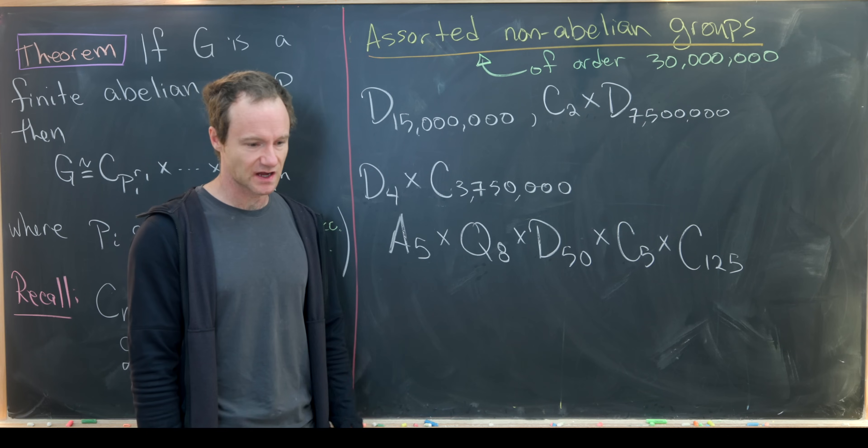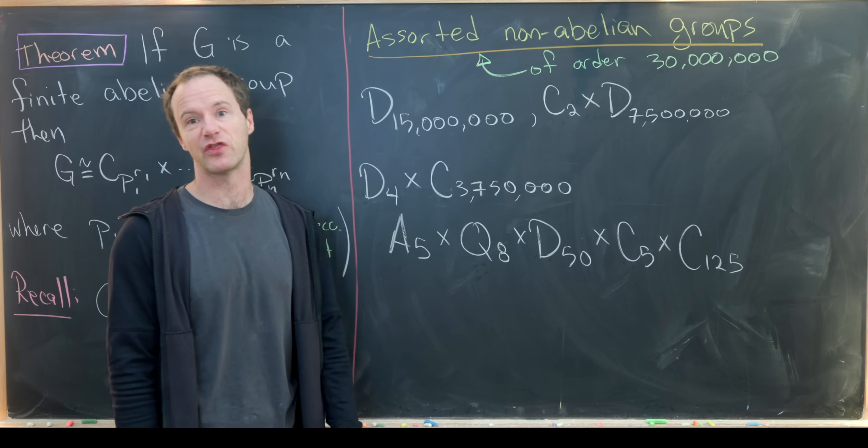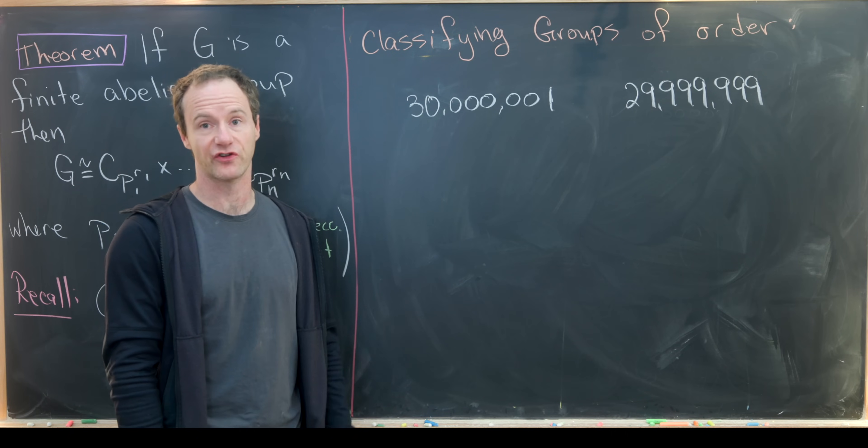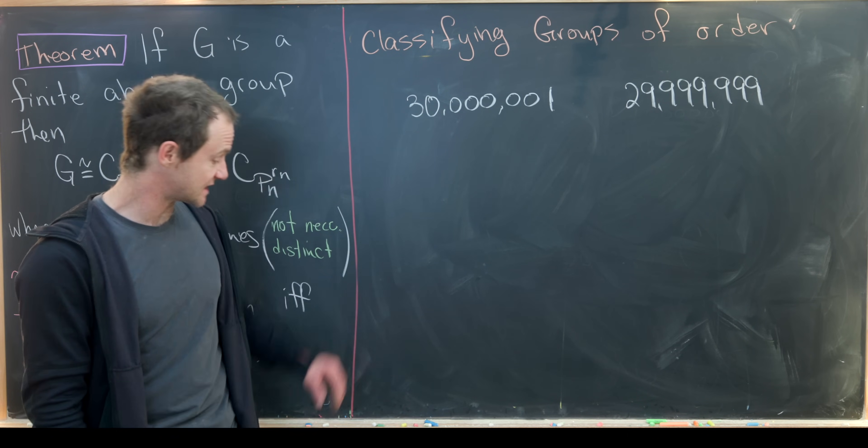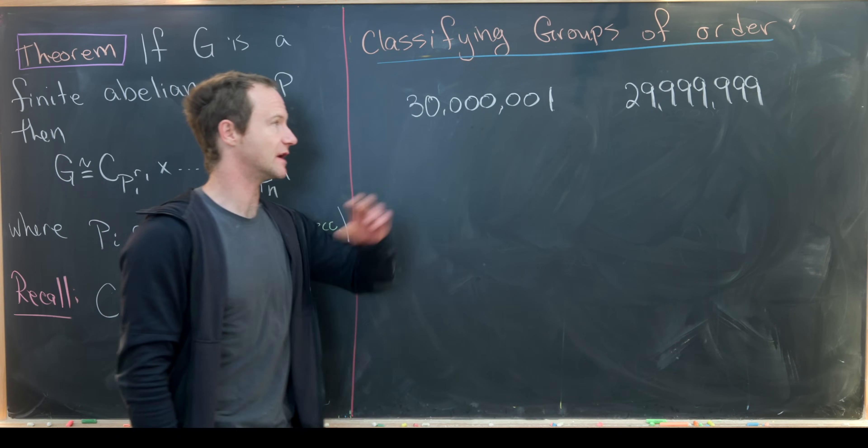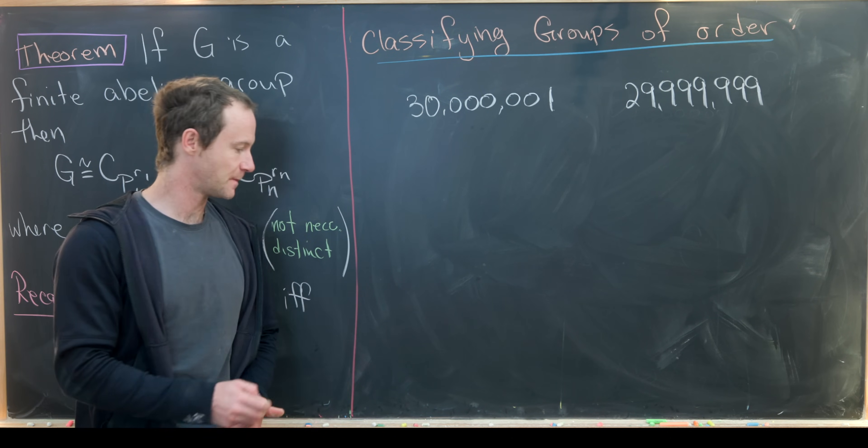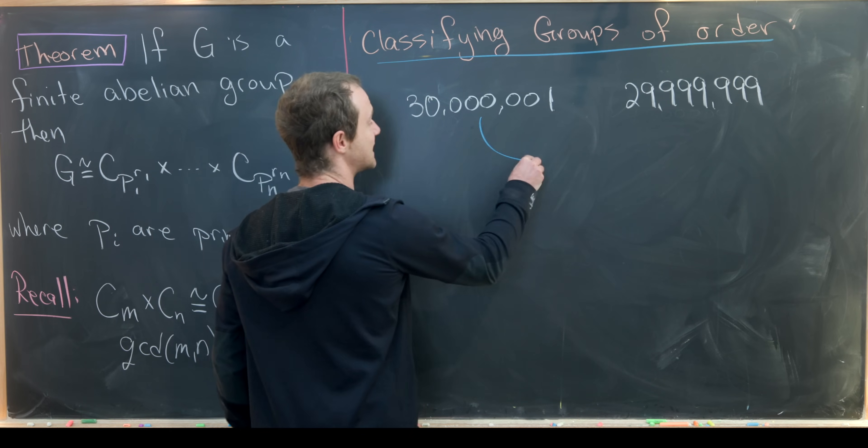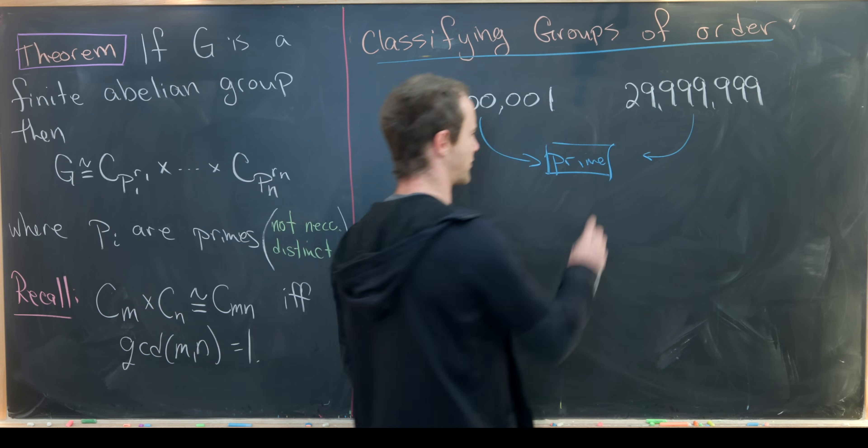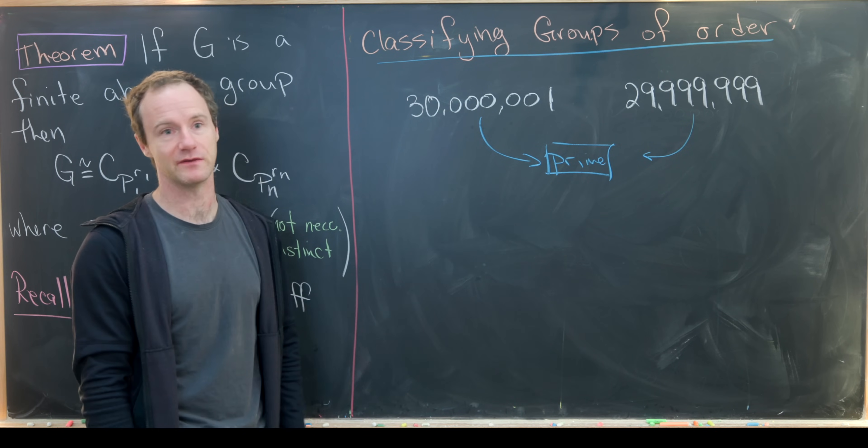So to finish this off, I'd like to look at groups slightly bigger and slightly smaller than 30 million. It seems totally unreasonable to classify all groups of order 30 million, but it actually turns out to be quite easy to classify the groups of order 30 million and one or 29,999,999. And why is that? Because each of these are prime numbers. They're both prime, which I think is pretty nice - we've got this twin prime pair hugging the number 30 million.